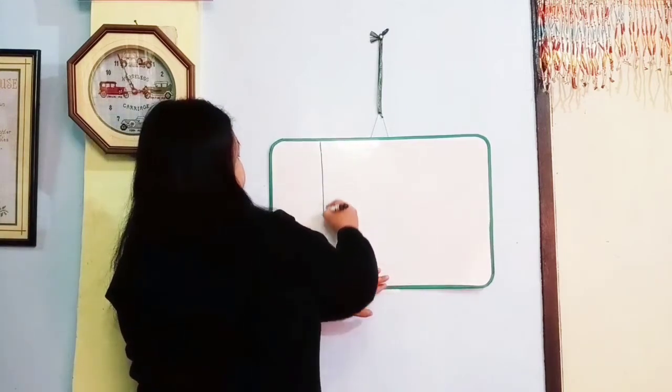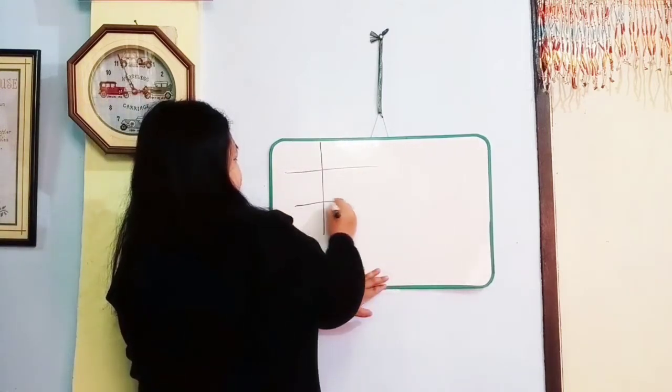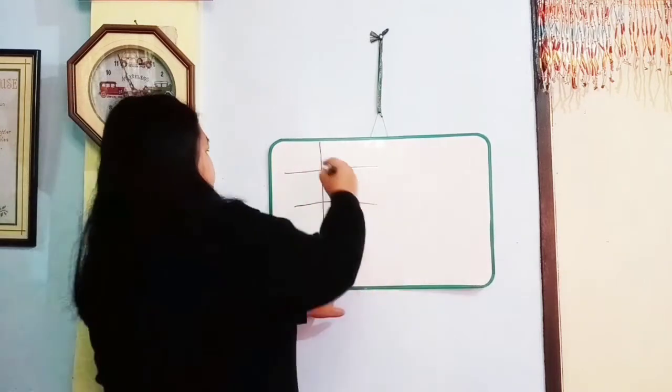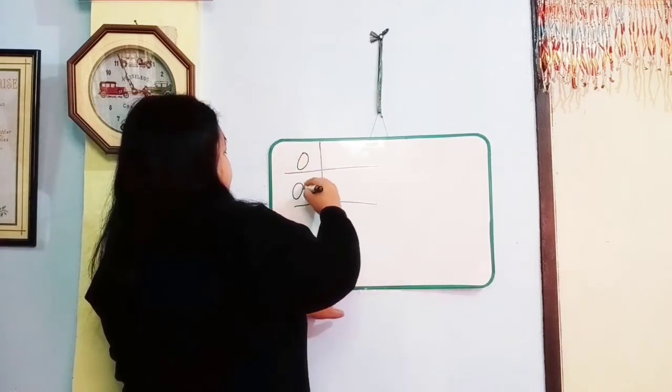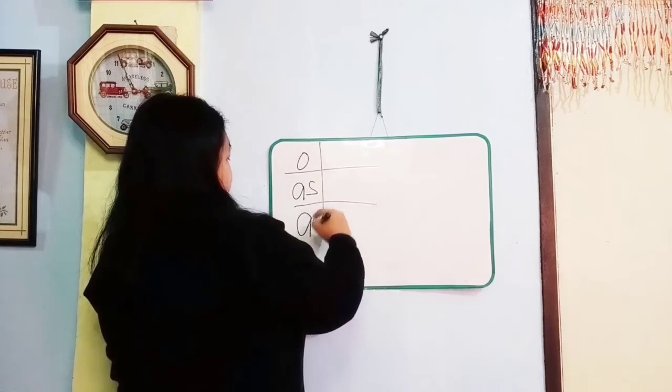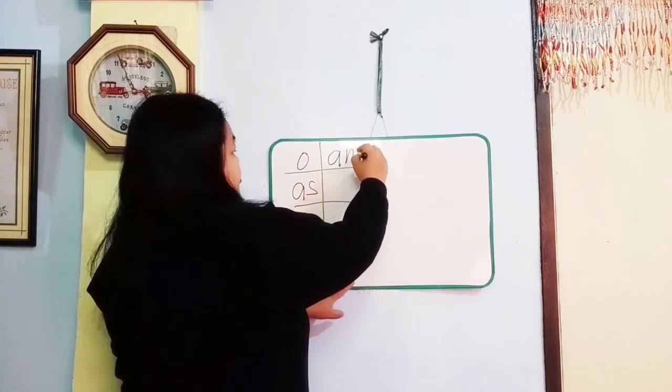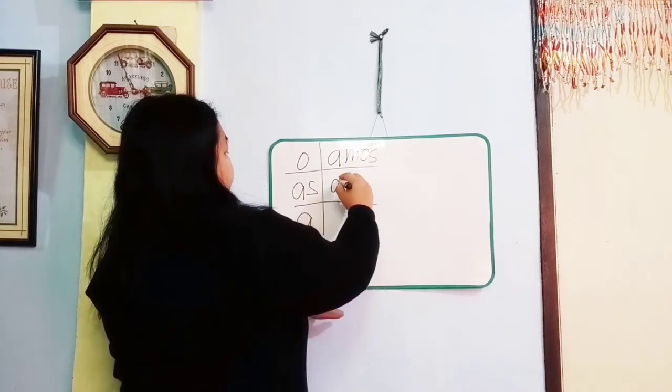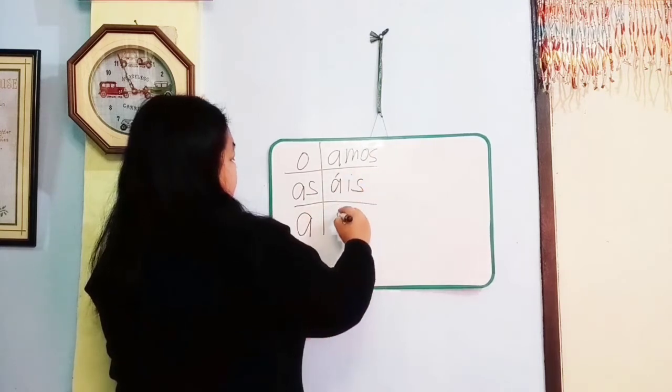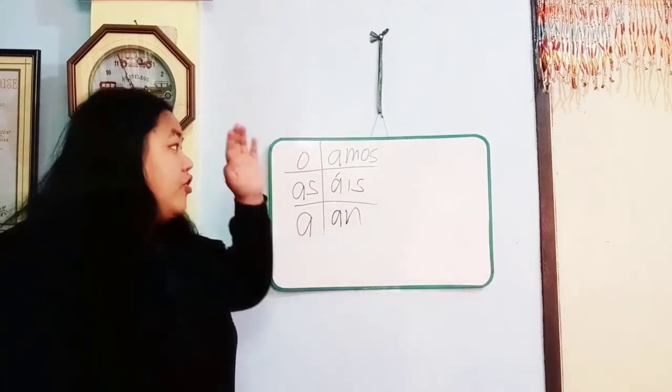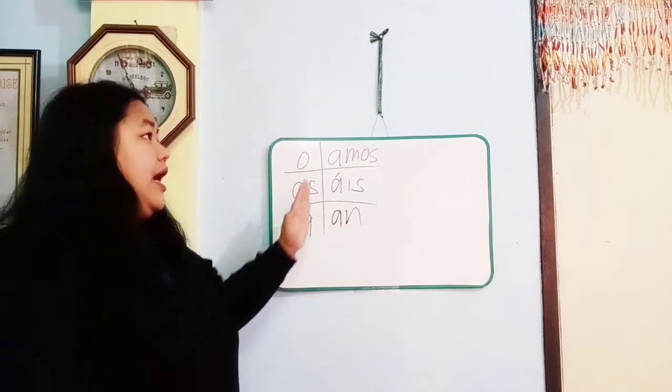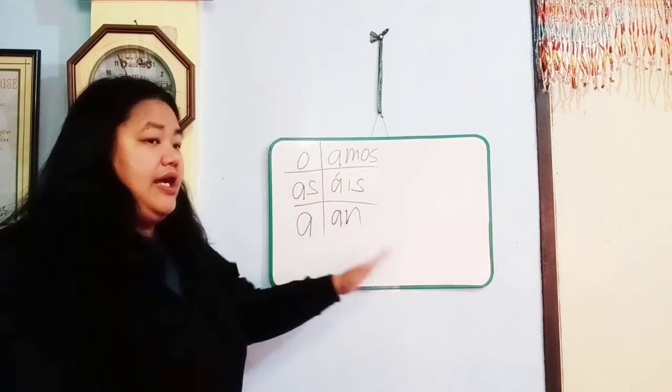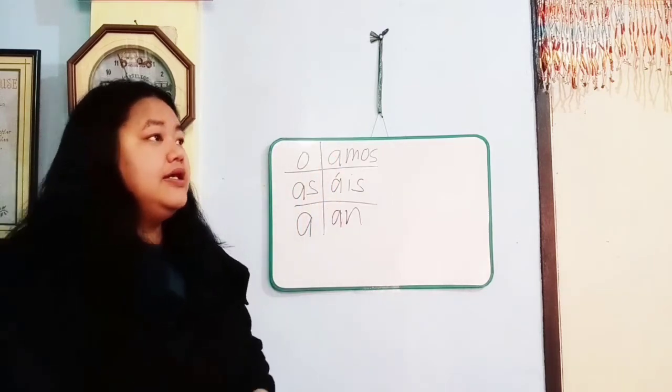So let's review. Of course we'll have the chart. On this part we have O, A, S, A, Amos. We have A, A, S, A, Amos, A, S, A, A, N. Hope you memorize that.